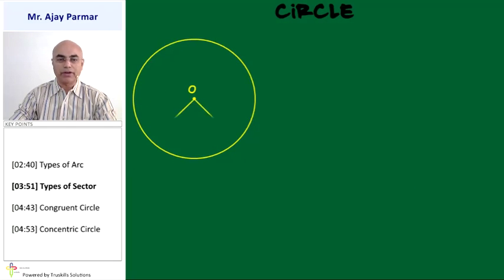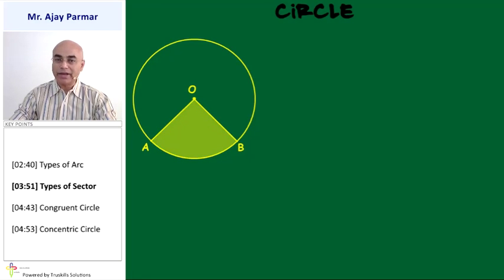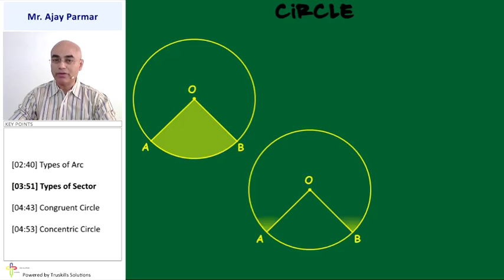We are given a circle with center O, and two radii are drawn — line segment OA and line segment OB. The region enclosed within angle AOB will be referred to as the minor sector. Whereas the region of the circle which does not contain the interior of angle AOB, where OA and OB are the radii, will be referred to as the major sector.